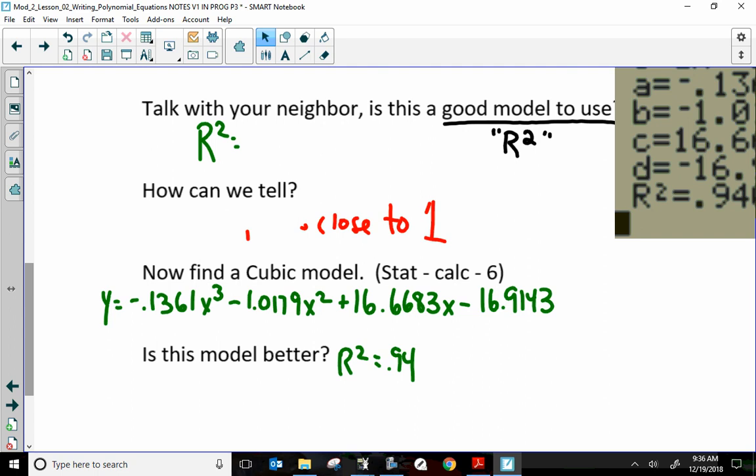Let's move this off to the side. Let's not forget this was 0.93. Yes, because r squared is close to 1. So, is this a better model? Yes.